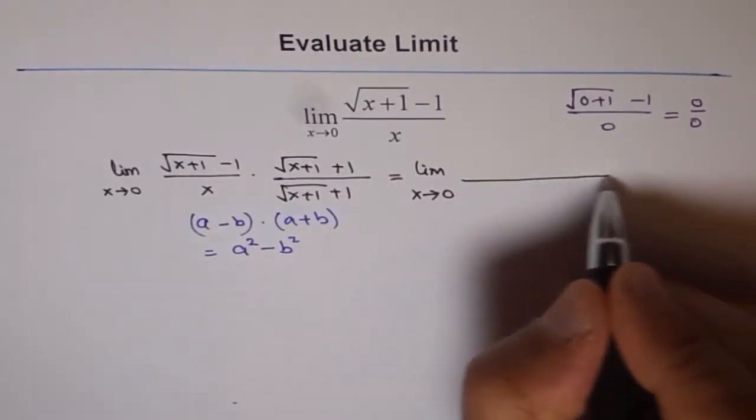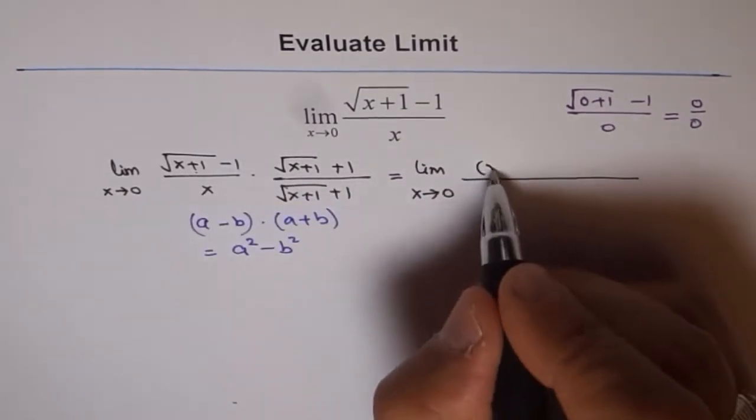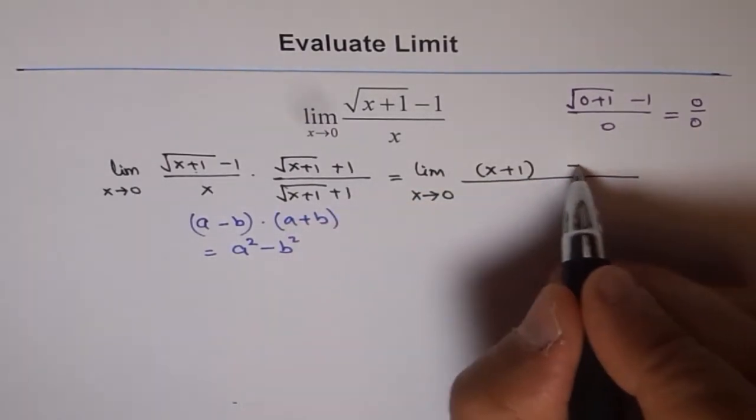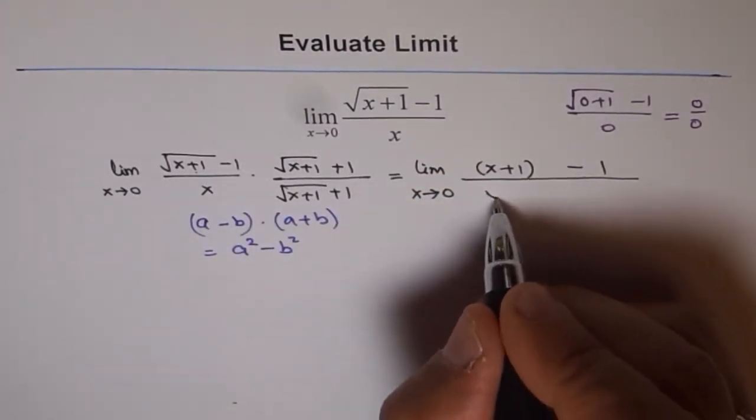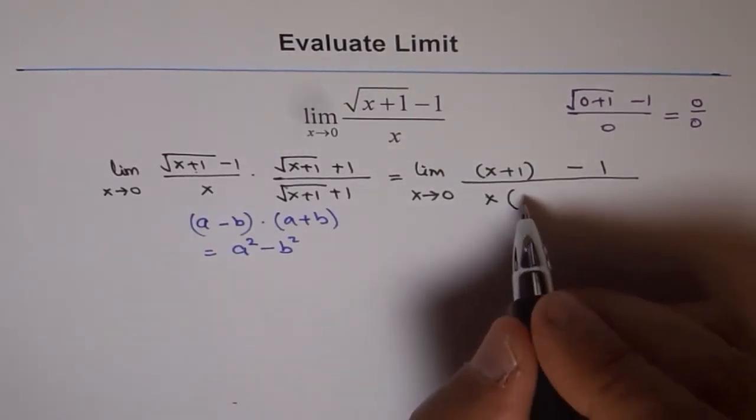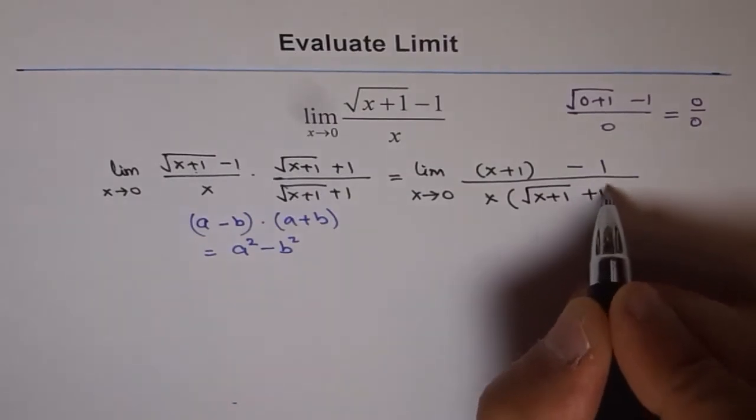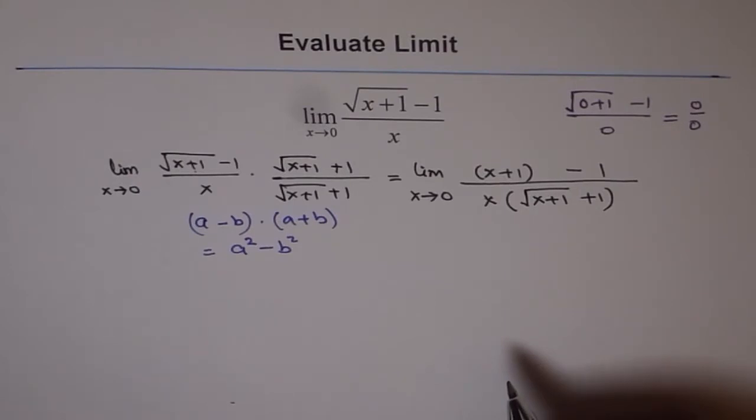We get limit x approaches 0, and in the numerator we get a squared minus b squared, which is x plus 1 minus 1 squared, which is 1. In the denominator, don't expand, write as factors. That is a simple rule. Follow this rule to get the correct solution in minimum number of steps.